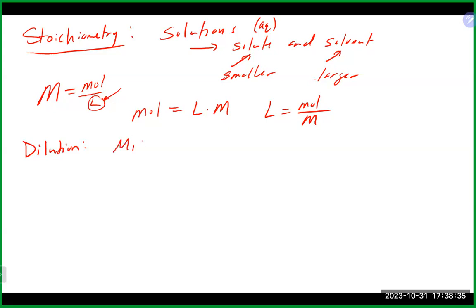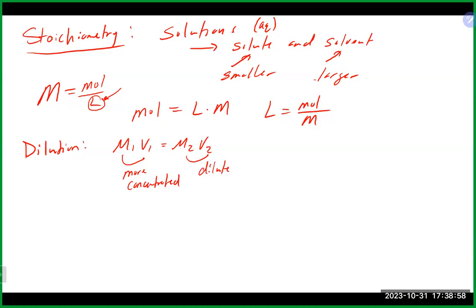There is a dilution equation: M1V1 = M2V2. M1 and V1 are the concentration and volume of the more concentrated solution; M2 and V2 are for the dilute solution. When you solve for V1, it's the volume of the more concentrated solution you need to dilute. V2 is your final volume. In dilution problems, how much water is added equals V2 minus V1.